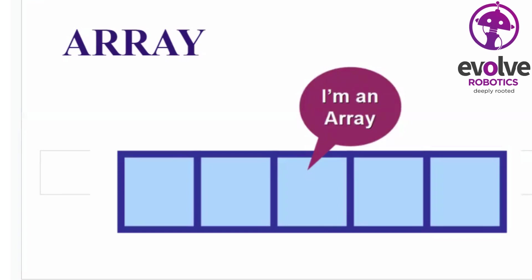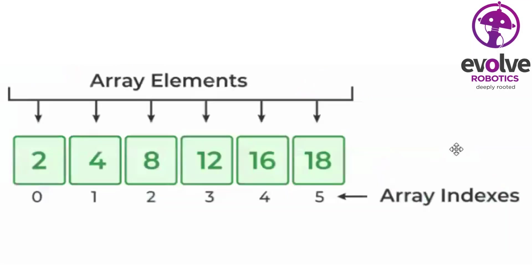There is an Array. There is a box with space locations where different elements are stored. I will show you the example. There are several boxes in the diagram. This is an Array, and we will show you the numbering: 0, 1, 2, 3, 4, 5.